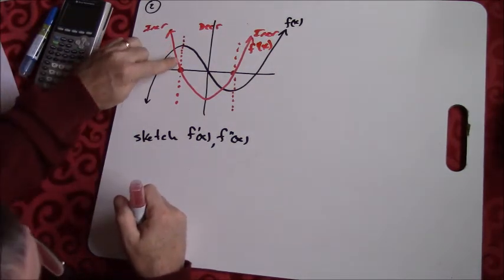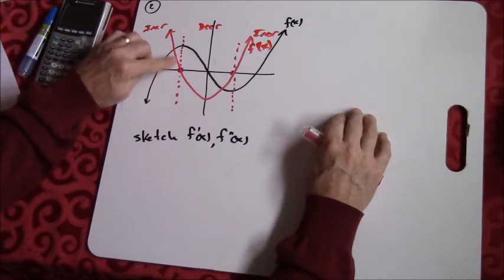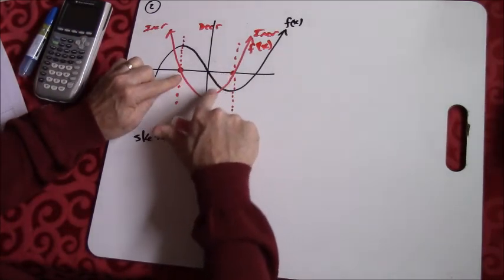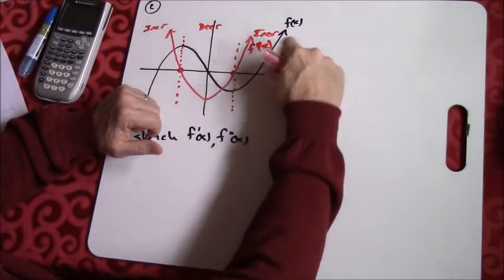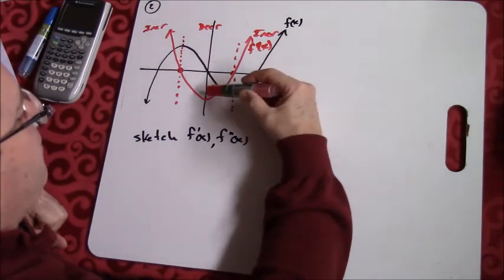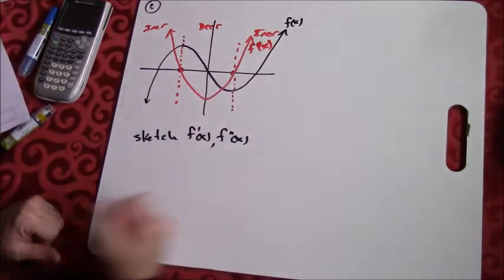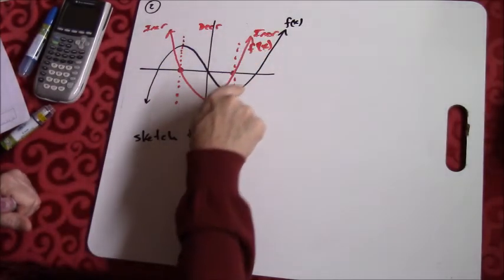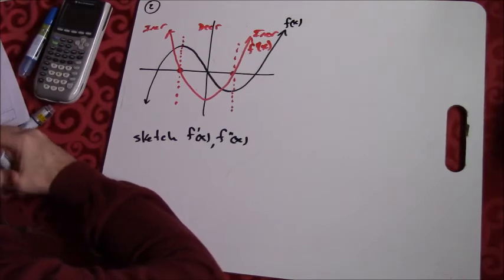When the function is increasing, the first derivative is positive — it's above the x-axis. When the function is decreasing, the first derivative is negative — below the x-axis. So f'(x) should be positive, then zero at the maximum, then negative, then zero at the minimum, then positive again. Someone might notice this looks like a cubic, so the derivative would be a quadratic — a parabola — but not every problem will look like that.